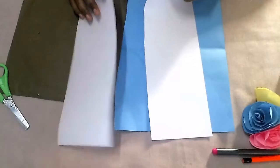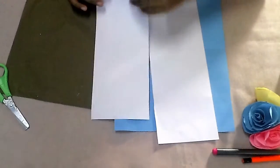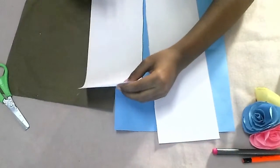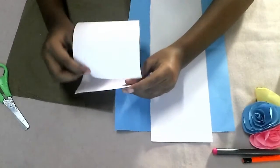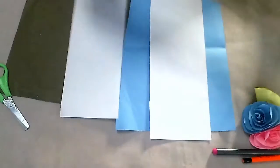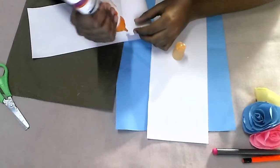Now I cut it and then we have to make a circle like this. And we have to put some glue right here and paste it. Now I am going to put glue.